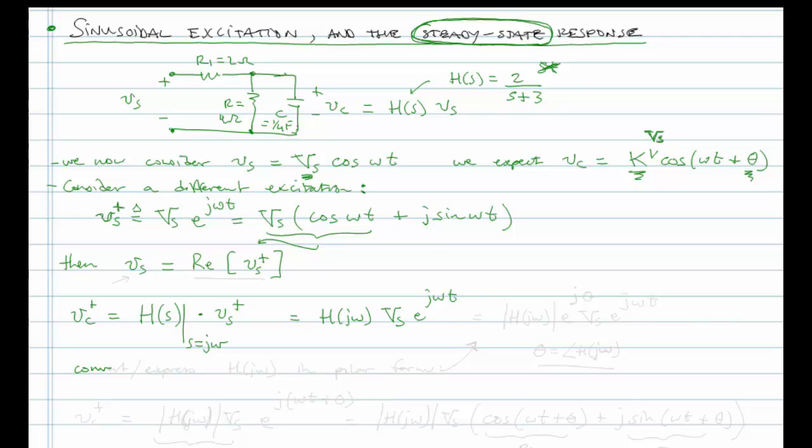Now express h of j omega in polar form. So we'll have, I'll just keep going here, and we have the magnitude of h of j omega times e to the j theta, where theta is equal to the angle of h of j omega. If you're unclear on this, go back and watch the previous lecture on the complex math where we did a lot with h of s, h of j omega, times capital Vs times e to the j omega t.